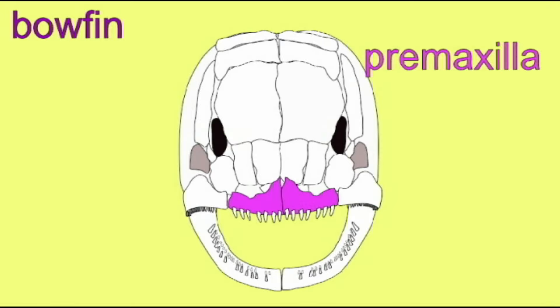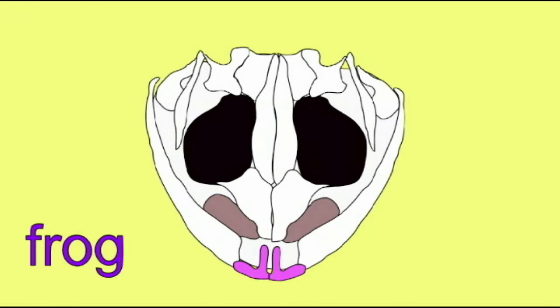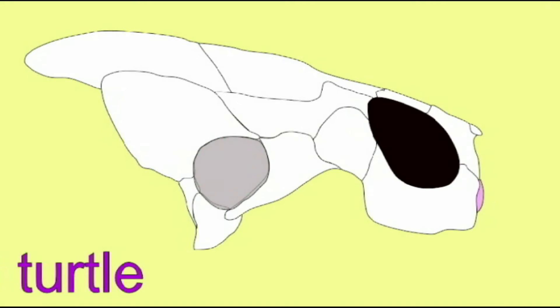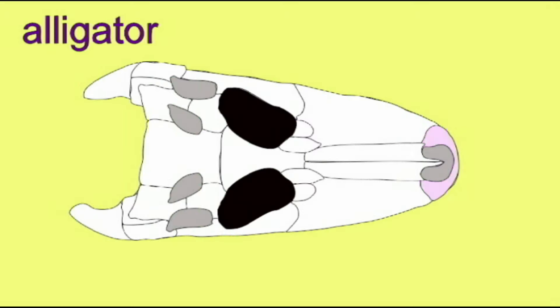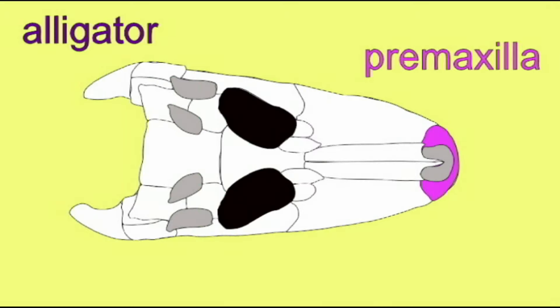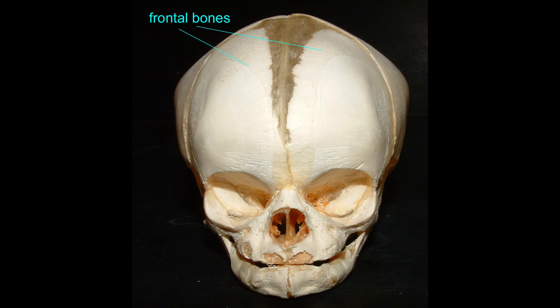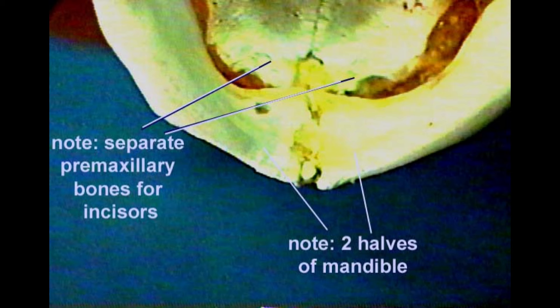Although it should be noted that as fetuses, the incisors are located in a separate bone, the premaxillary bone, which is typical in vertebrates. However, in human fetuses, the premaxillary bones fuse to the maxillary bones.